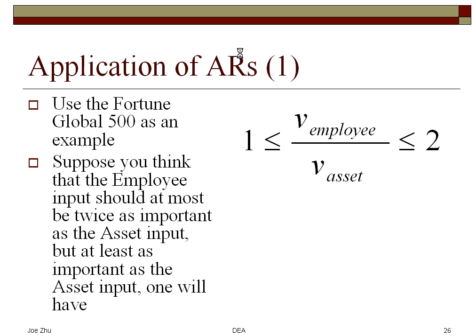Again, this is non-linear. If you would solve this in an LP you would have to convert that into two linear constraints. The first one, for example, would be: V_employees is less than or equal to two times the weight on the assets. The second one is: the weight on the assets should be less than or equal to the weight on the number of employees. You add that information into the multiplier model. You can only add that into the multiplier model, not the envelopment model, because in the envelopment model you don't have those multipliers.